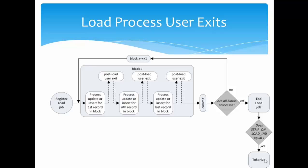After processing records from each block, the post load user exit executes and the MDM hub checks whether more blocks remain. This continues until there are no more blocks to process, at which point the load job stops. Once the load job completes, the strip table gets populated with the row ID objects of the newly inserted or updated records.